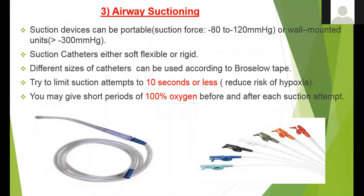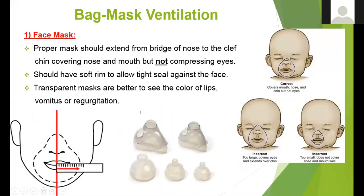Another device we need is airway suction using suction catheters. We have soft catheters and rigid catheters, either portable or wall-mounted. Choose the proper size catheter, oxygenate the patient before suctioning, ensure 100% oxygen, and keep each suction trial under 10 seconds to avoid hypoxia. Do not go too deep with the catheter to avoid triggering the gag reflex or aspiration.